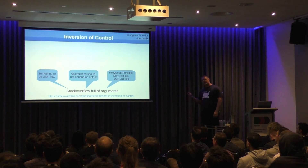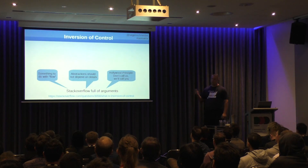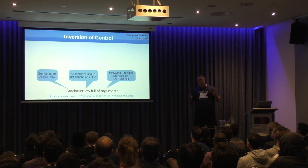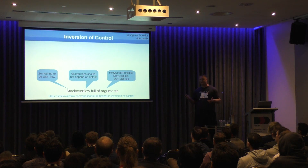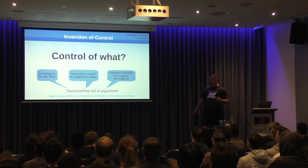Then we get to inversion of control. And that's like, well, what's this thing? It's got principles — something to do with flow, something to do with abstraction, not talking to details. If you actually read the Stack Overflow answers trying to explain what it is, there are arguments and really it's just explaining dependency injection. So when I come to inversion of control, I actually ask the question: control of what?